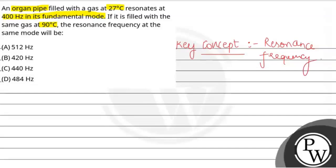Okay, so what is resonance frequency? Resonance frequency ka formula, if we can see, f is equal to v over lambda.